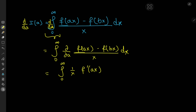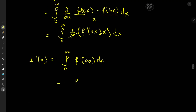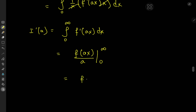Because we're differentiating partially with respect to a, we get the integral from 0 to infinity of (1/x) times f′(ax) times x dx — by the chain rule the derivative of ax with respect to a gives a factor of x — and the derivative of f(bx) is zero since it's independent of a. Nice cancellation occurs, leaving the integral from 0 to infinity of f′(ax) dx. Applying the fundamental theorem of calculus gives f(ax)/a with limits 0 and infinity, so di/da = [f(∞) minus f(0)] divided by a.